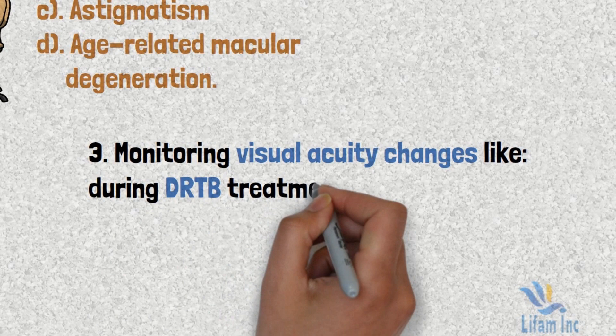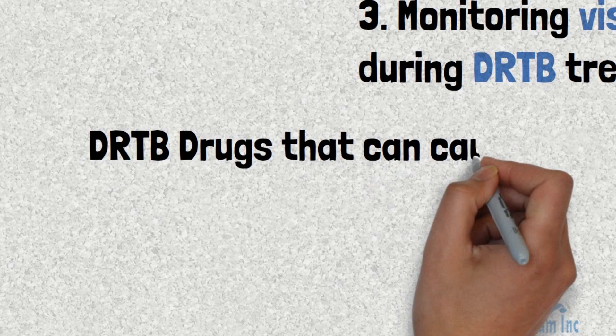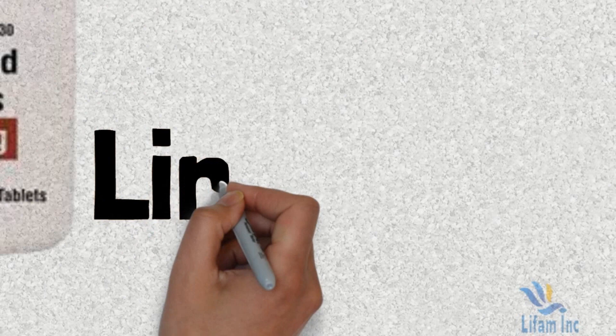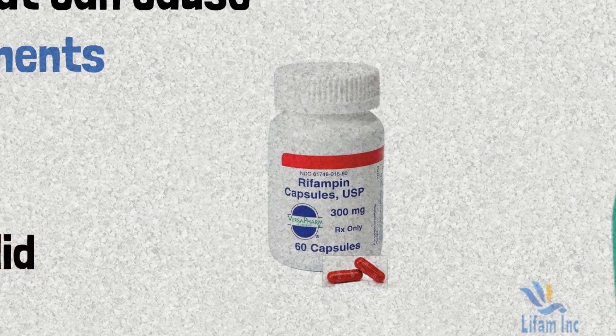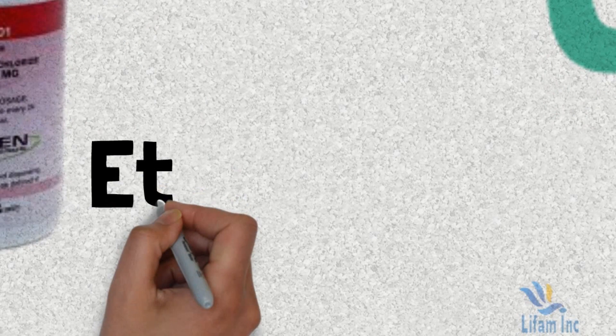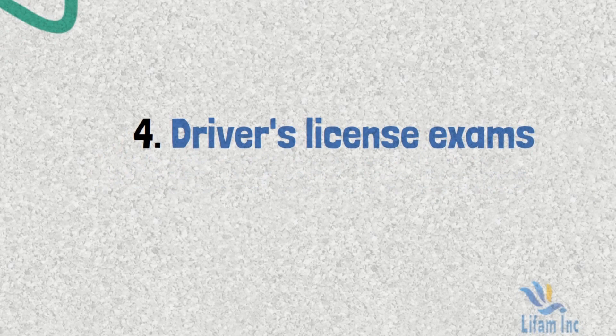Another application is monitoring visual changes during treatment, particularly in DR-TB treatment. Drugs that may cause visual acuity problems include ethambutol, rifampicine, isoniazid, a computer-controlled agent, and pyrazinamide.